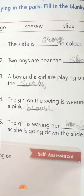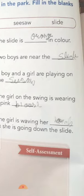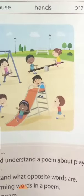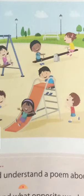Last question: the girl is waving her dash as she is going down the slide. Look at the girl — jho woh neechhe slide se utarti huye, woh apna haath wave kar rahi hai. Dikhai de raha hai na? Jo hands ko wave kar rahi hai. The answer is hands.